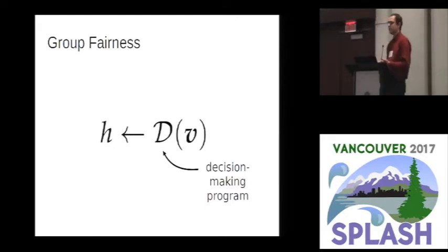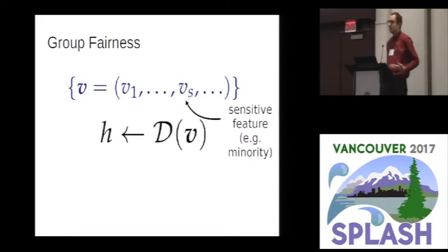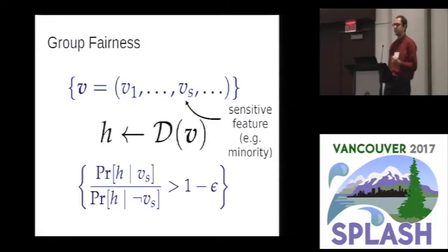Suppose that I have some decision-making program D that takes as input a vector V of features that describe a person. And suppose that this program is going to decide whether or not to hire them and so it outputs a decision of hire them or do not hire them. We're going to build a Hoare triple here. Our precondition says that the input V is some set of features where in particular we have a bit that specifies whether or not that individual is part of some sensitive protected group. And what we might then say for our group fairness post condition is that I might specify that my program should be as likely to hire someone given that they are from that protected group as it would be likely to hire someone who's not in the protected group or at least within some epsilon factor.